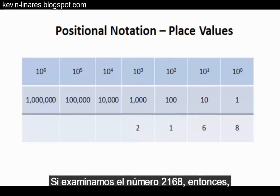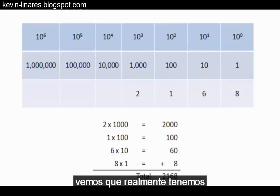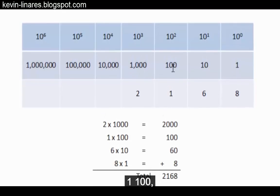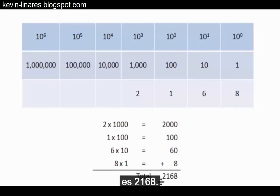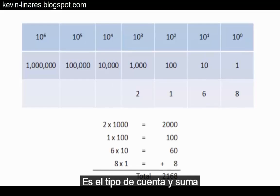If we look at the number 2,168 in long form, we can see that effectively we have two one-thousands, one one-hundred, six tens, and eight ones, and 2,000 plus 100 plus 60 plus 8 totals 2,168. This is the type of counting and addition that we learn as children.